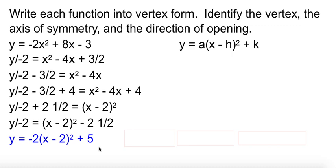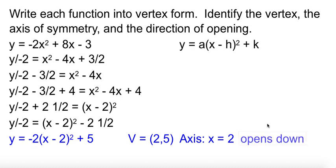Now we have it in the right form. Now we can read the vertex. Remember the vertex is h, k. Well h here is 2. k is 5. So the vertex is 2, 5. The axis of symmetry is the x value of that vertex. So x equals 2 is the axis of symmetry. And then since this is negative, it opens down. If your a number is positive, it opens up. When it's negative, it opens down.